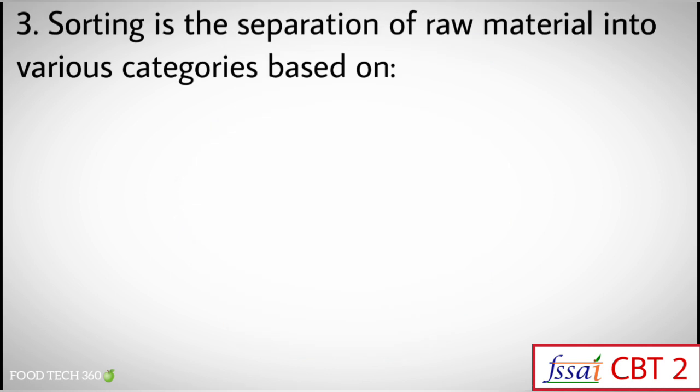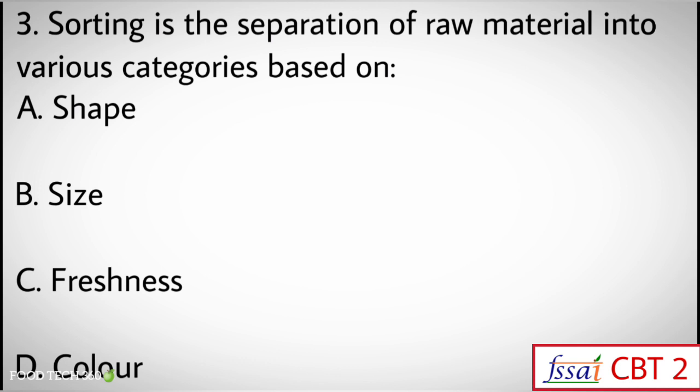Question number 3: Sorting is the separation of raw material into various categories based on — Options: A) Shape, B) Size, C) Freshness, D) Color.